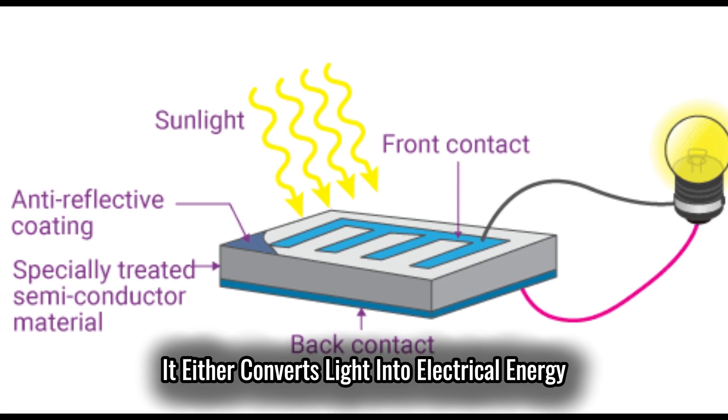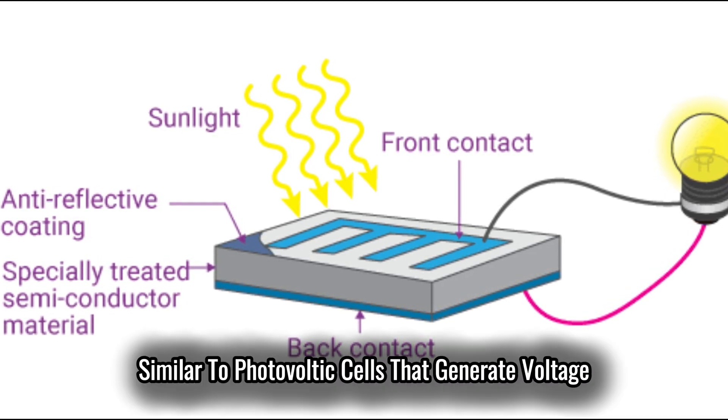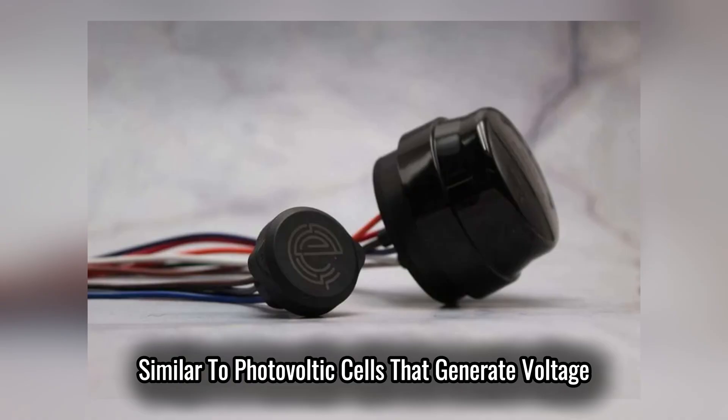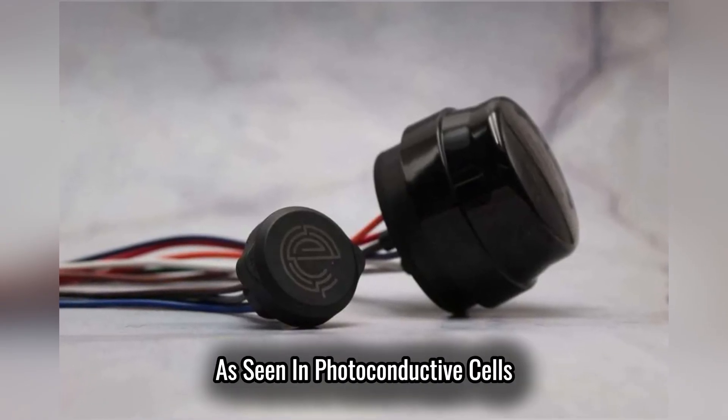It either converts light into electrical energy, similar to photovoltaic cells that generate voltage, or adjusts the flow of current, as seen in photoconductive cells.